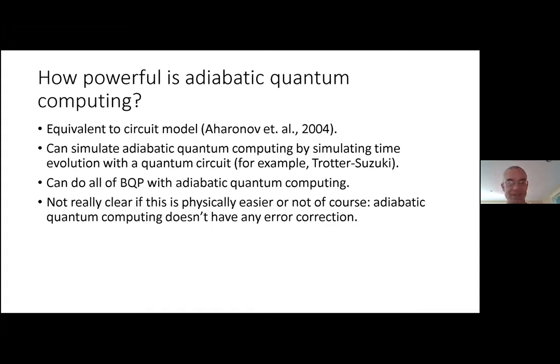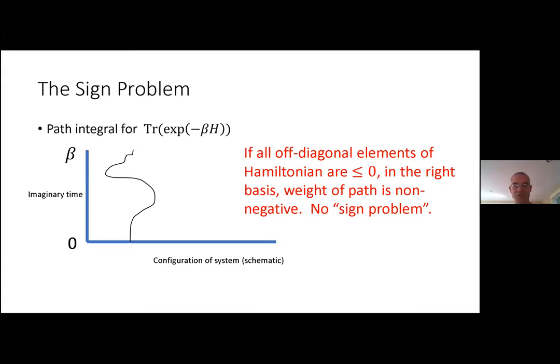It's not really clear whether adiabatic quantum computing is any easier to implement. On one hand, you might think it's easier because you don't need to control a circuit — you just slowly turn off certain terms and turn on others. On the other hand, the theory of error correction for adiabatic quantum computing isn't at the same level as for the circuit model. There's no real fault tolerance for tolerating noise throughout the evolution.